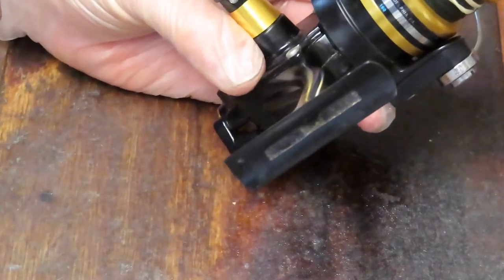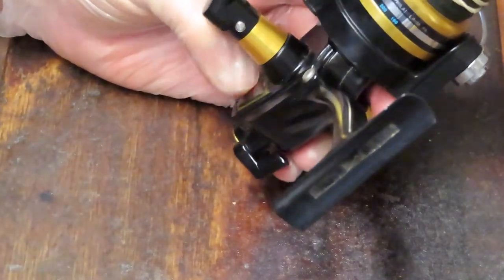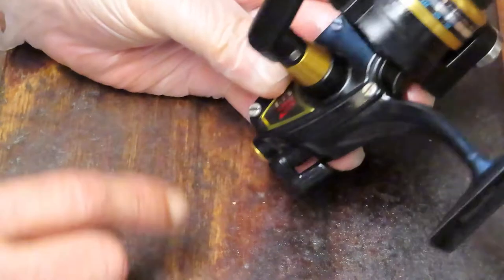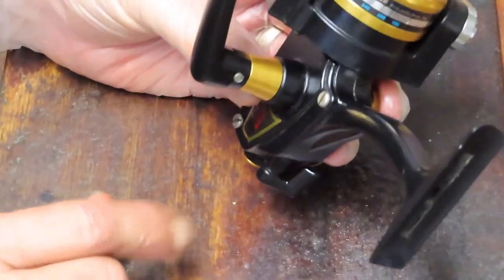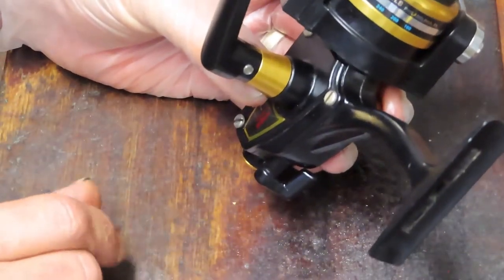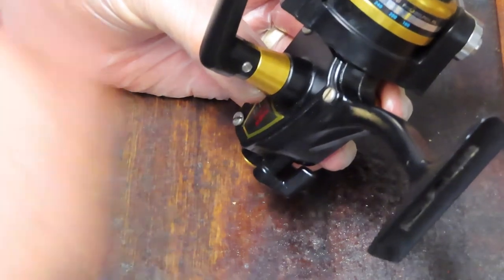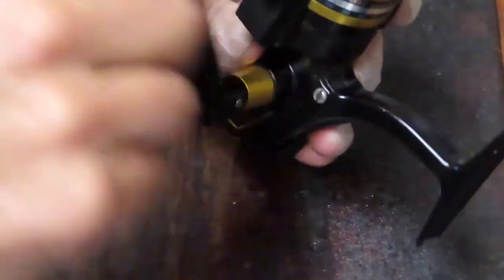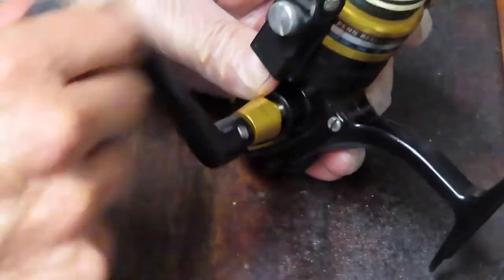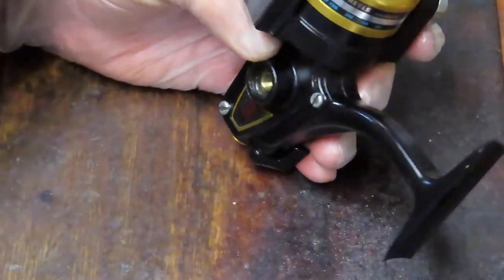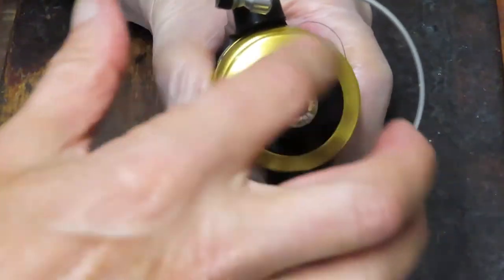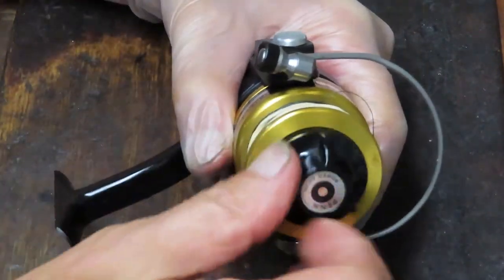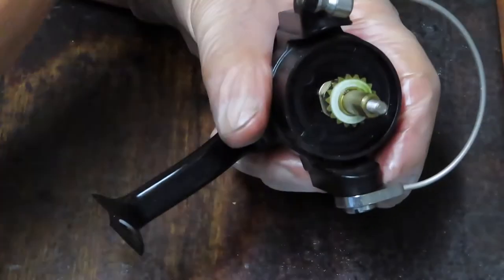That's the cause of the problem. So in order to replace the anti-reverse dog, you pretty much have to take the reel apart anyway. So I thought I would just reassemble this thing and show you how it comes apart, show you how to replace that dog. And then if you're tuning it up, I'll point out along the way how to tune it up.